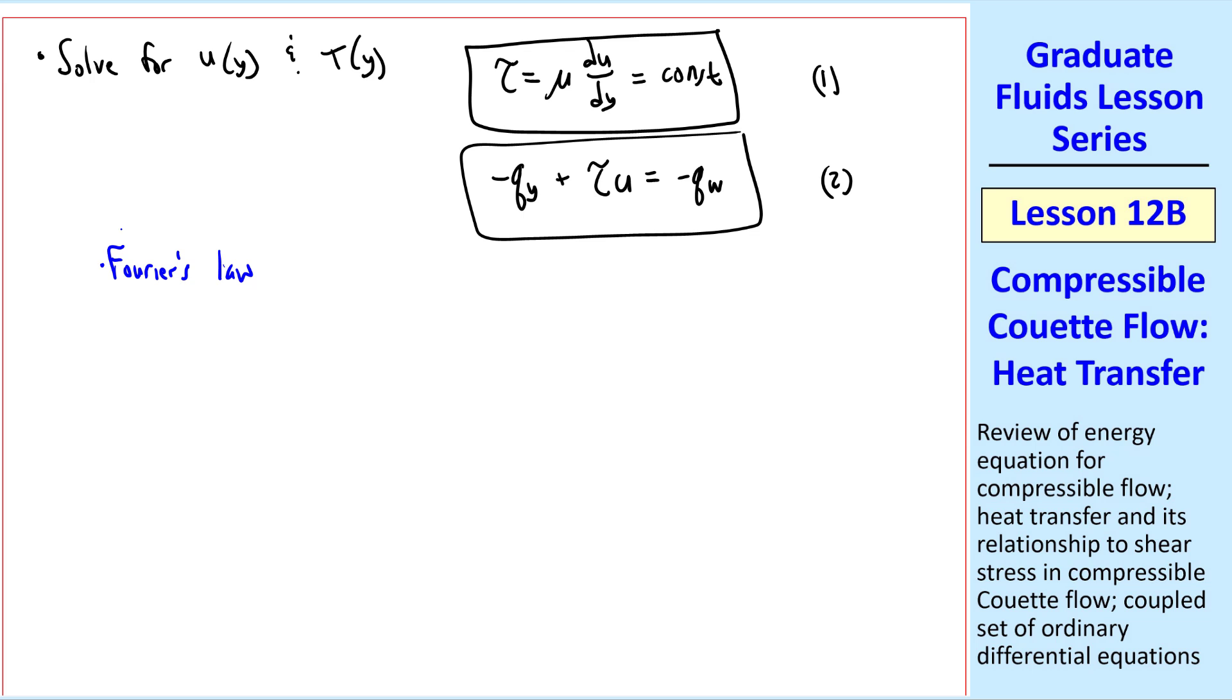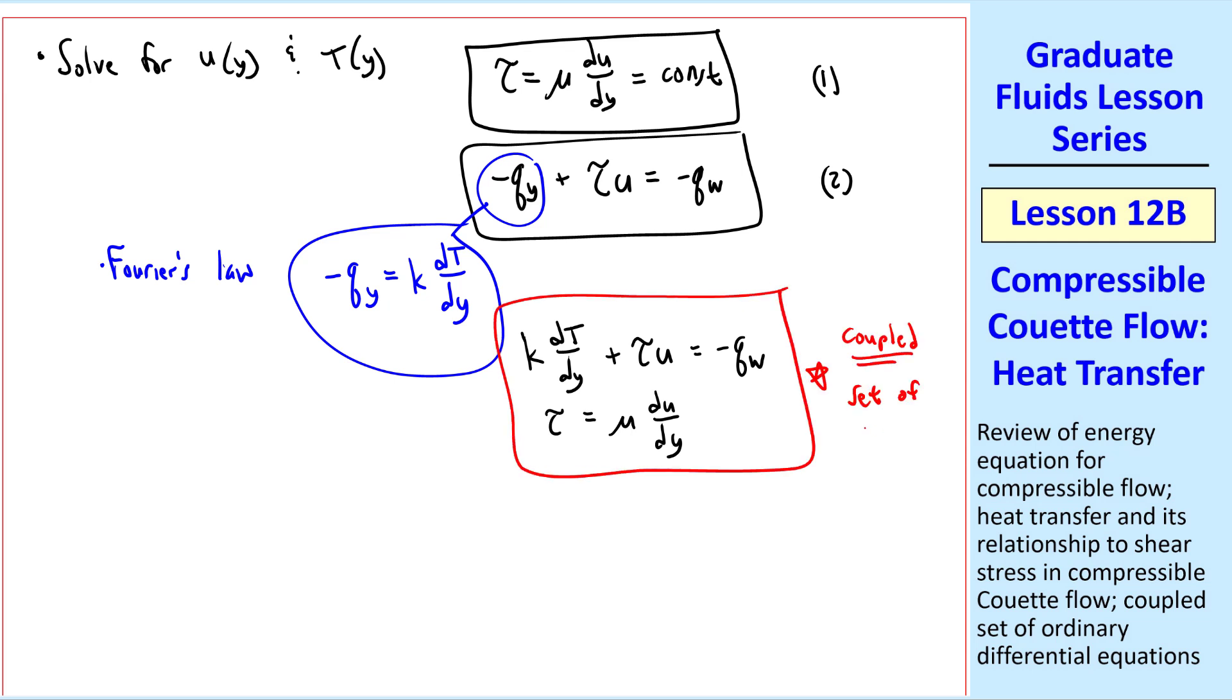Recall Fourier's law. In this case, the 1d form of it, negative qy equal k dt dy. Let's plug that in here. K dt dy plus tau u equal negative qw. And equation 1 is tau equal mu du dy. These two equations are a coupled set of two ordinary differential equations. They're coupled because mu is a function of temperature. Thermal conductivity k can also be a function of temperature. And so temperature indirectly comes into this equation, as well as this equation. I'll write down that, in general, mu equal mu of t and k equal k of t.